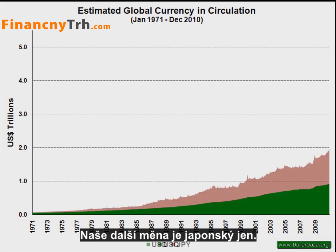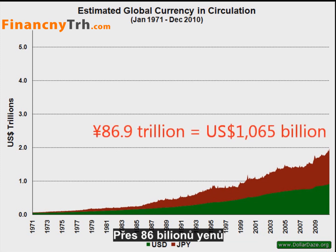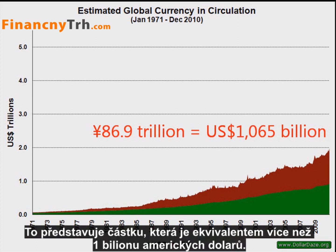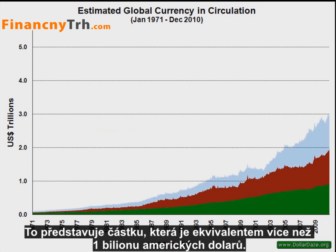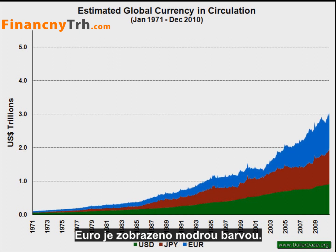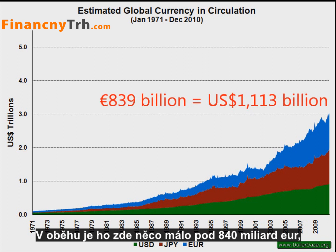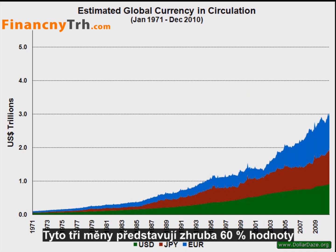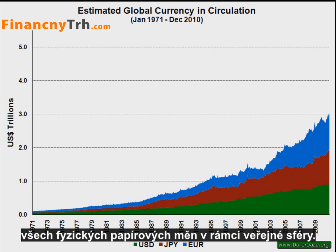Our next currency is the Japanese yen. Over 86 trillion yen circulates among the public, representing an amount equivalent to more than 1 trillion U.S. dollars. The euro is represented in blue, with just fewer than 840 billion euros in circulation, equivalent to 1.1 trillion U.S. dollars. These three currencies represent nearly 60% of the value of all physical paper currency within the public domain.